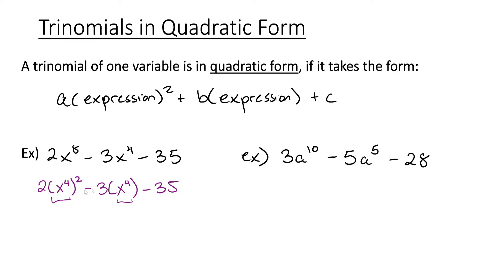We won't be able to factor polynomials like this directly. We're just going to treat x to the fourth like it's x, then we would factor and substitute back in the x to the fourth later. This example is similar. We can express this as 3 times a to the fifth squared minus 5a to the fifth minus 28. So here a to the fifth is like our x in this type of problem.